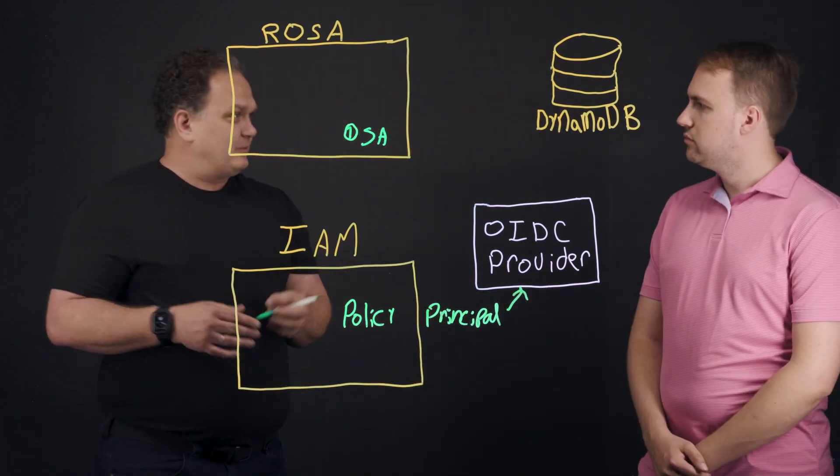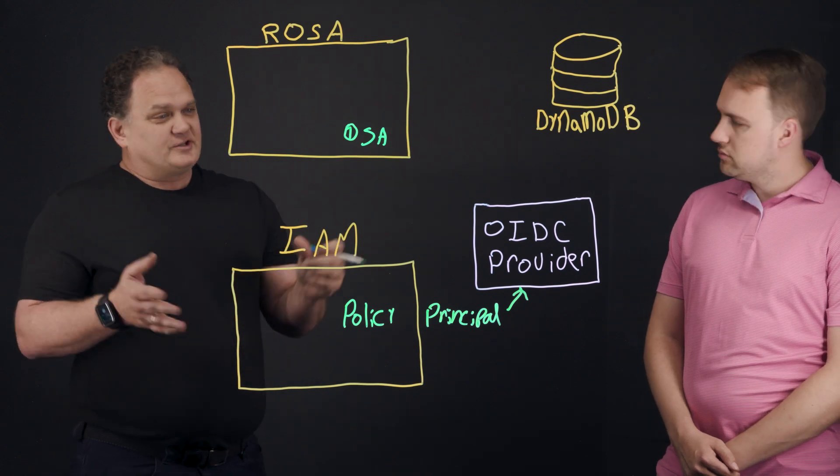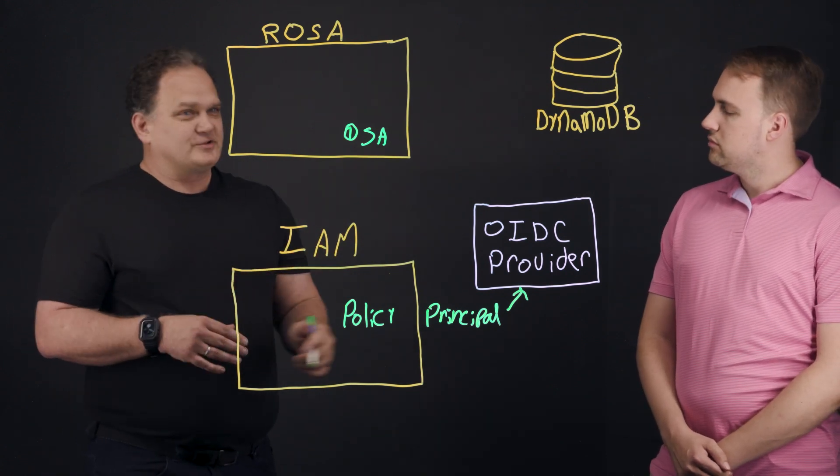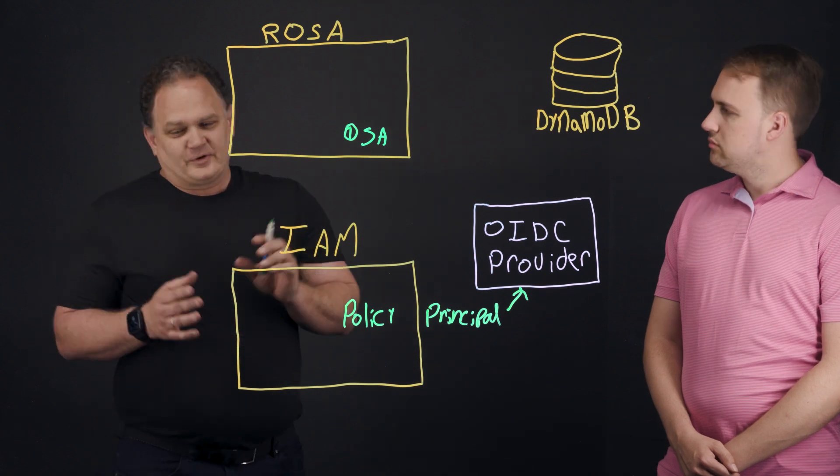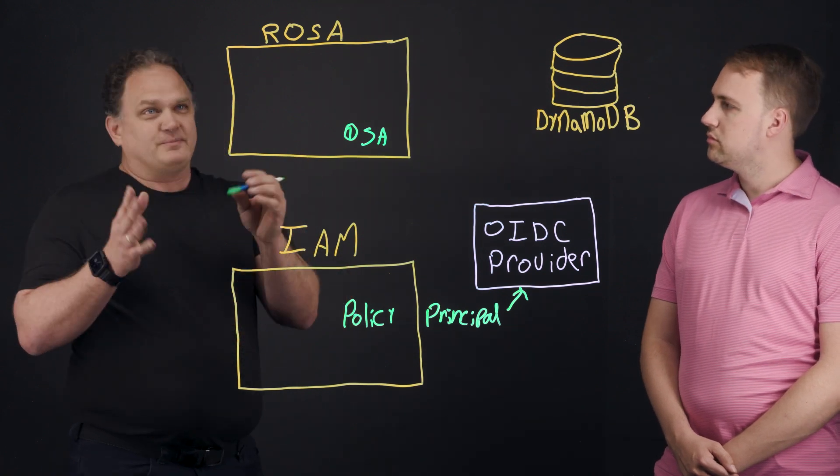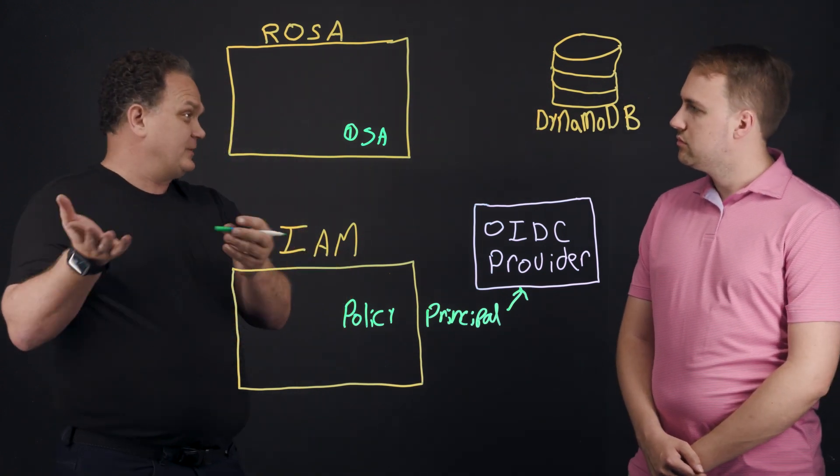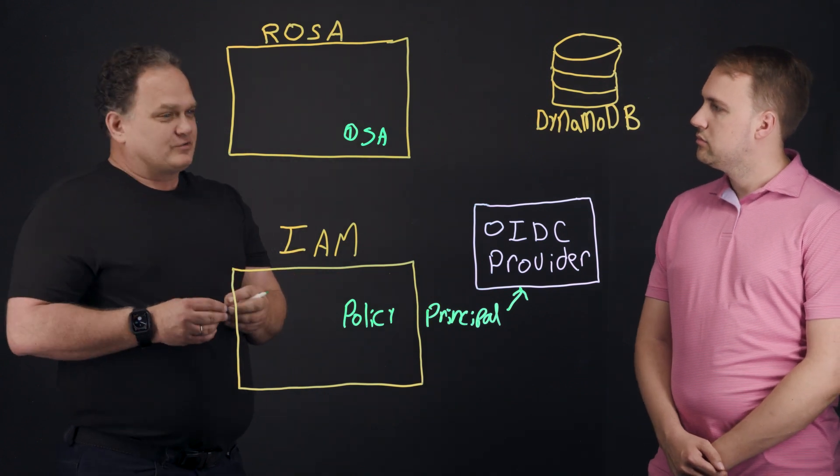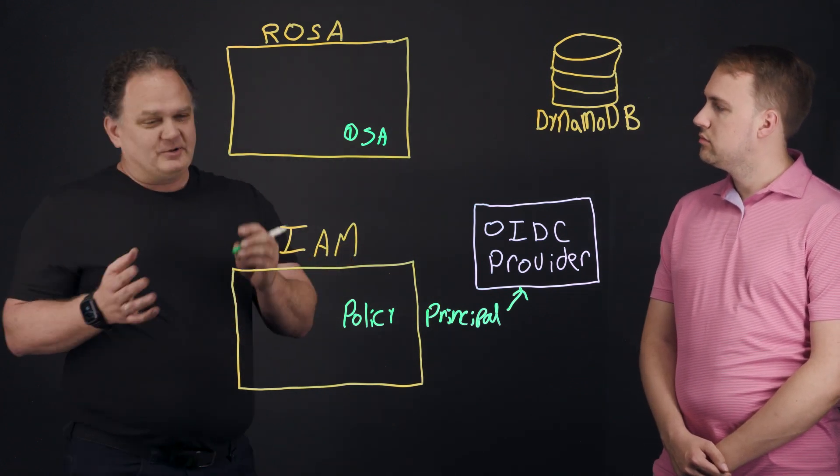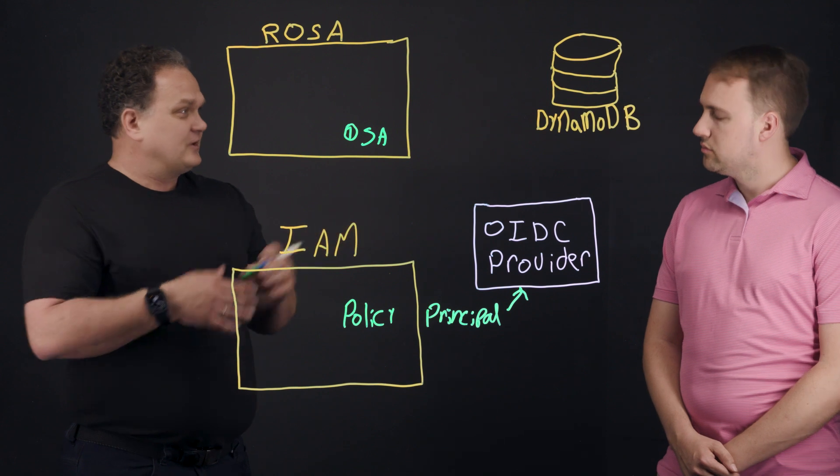So this OIDC provider with a ROSA cluster, we get this by default when we create the cluster. So the OIDC provider provides short-term credentials for pods running in the cluster. So for example, there's many parts of ROSA. One is, say, the image registry, right? The image registry needs permissions to do certain things. Namely, it needs to access S3 to store the images.